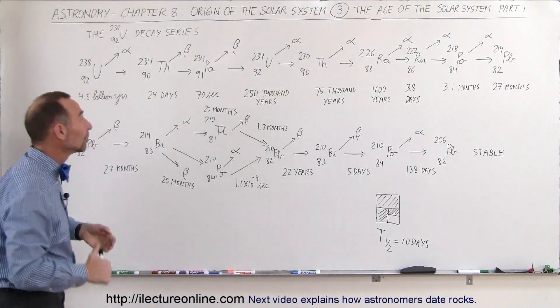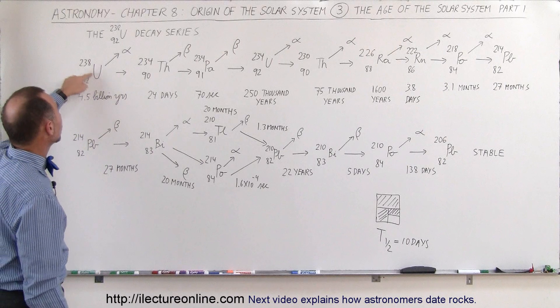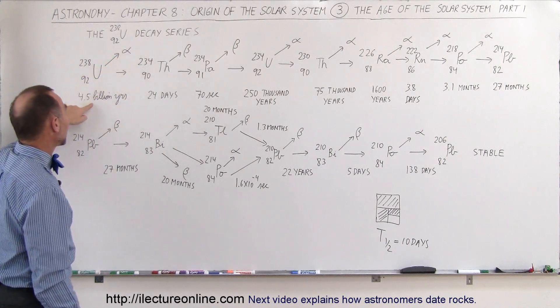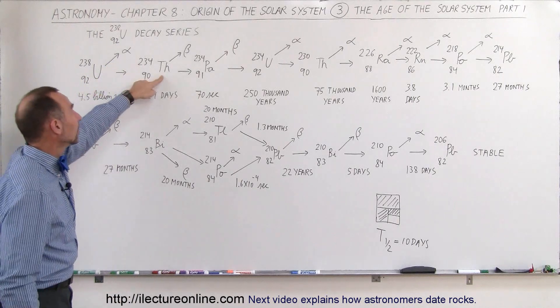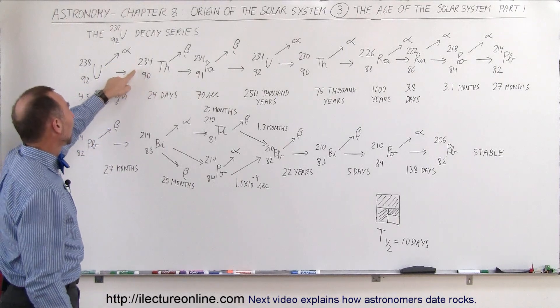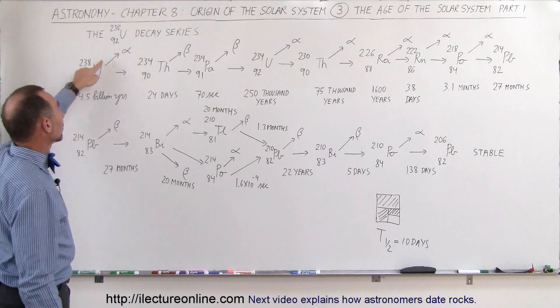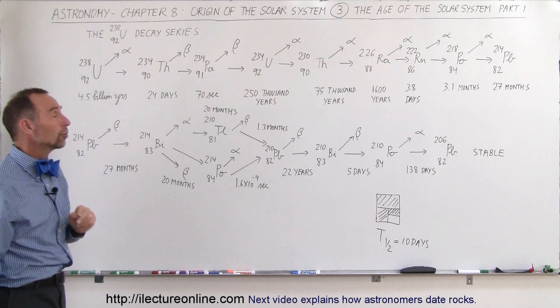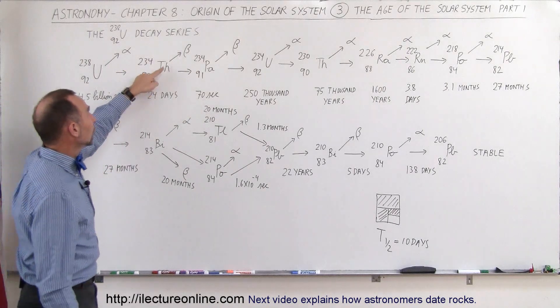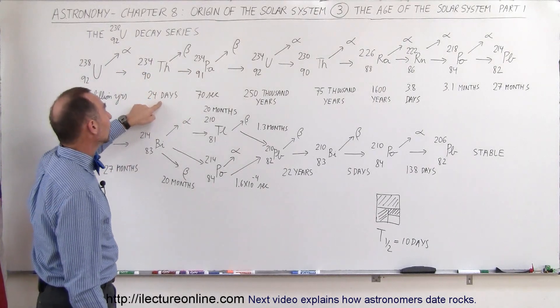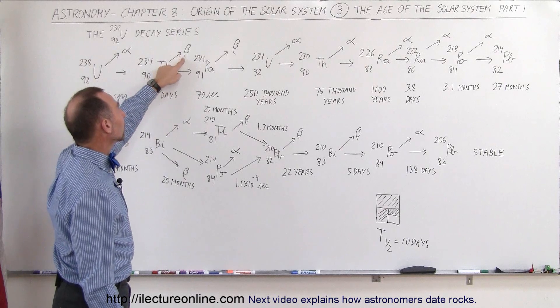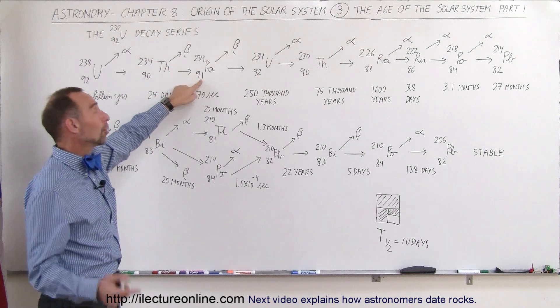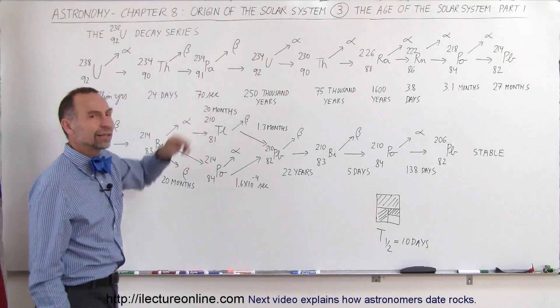So let's look at the decay series. We start out from Uranium-238, that can shoot out an alpha particle, on average, every four and a half billion years, half of it will have decayed into the next element, which is thorium, which has four less nuclear particles, because an alpha particle has four particles, and two less protons, because an alpha particle has two protons. So then the thorium has a half-life of 24 days, it will shoot out a beta particle. A beta particle means that one of the neutrons turns into a proton, so now you have 91 protons, which means you now have protactinium.